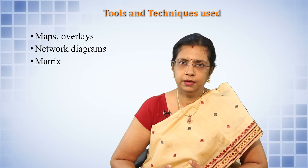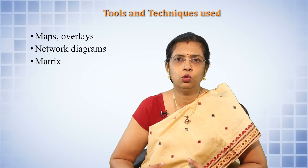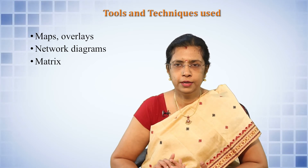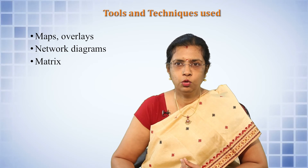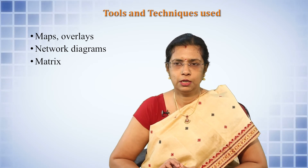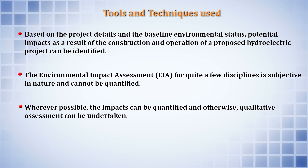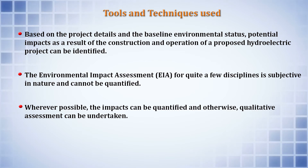Whenever an EIA assessment is being done, the tools and techniques to be used must also be analyzed — including what maps and overlays will be used, network diagrams, and matrices. Based on the project details and baseline environmental status, the potential impacts of the construction and operation of the proposed hydroelectric project can be identified. The EIA is subjective in nature for many disciplines and cannot always be quantified; wherever possible, impacts are quantified, otherwise qualitative assessment is undertaken.